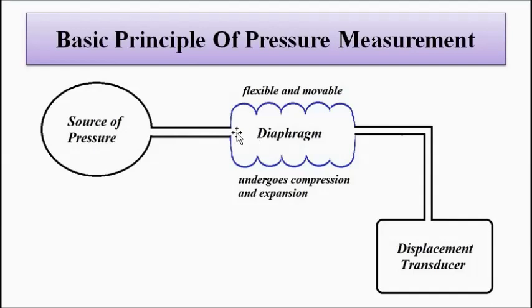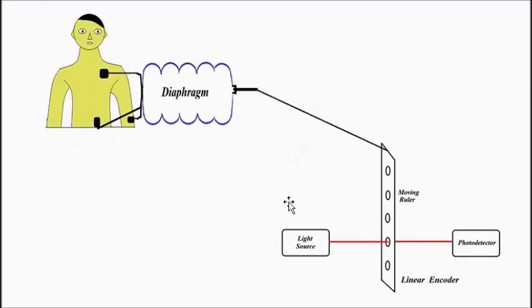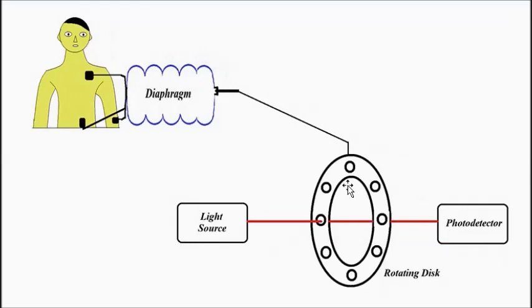That diaphragm movement, compression and expansion, is causing the ruler to undergo to and fro movement and the disc to rotate, which causes fluctuations in the transmission or blocking of the light signals.